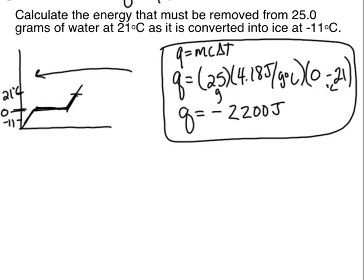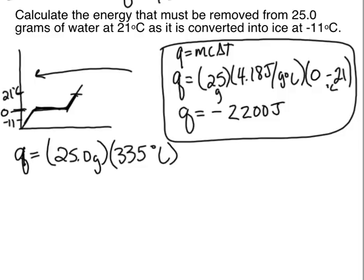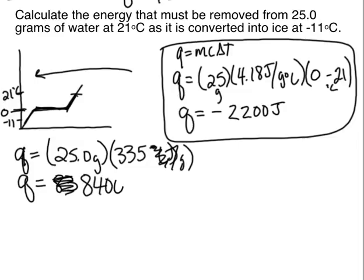Step two is a heat of fusion. Fusion is melting; vaporization would be the liquid-to-gas line. Q = mass × heat of fusion = 25 grams × 335 joules per gram = 8,400 joules. Now, this is where you need to think — this is just the quantity required to melt that much stuff. We're removing that, so we have to make this negative.